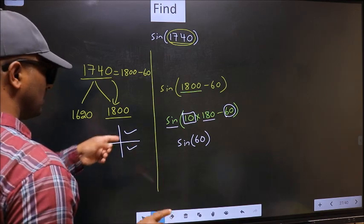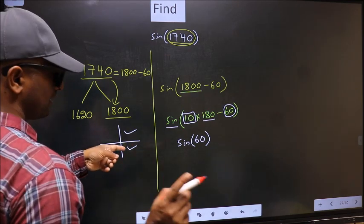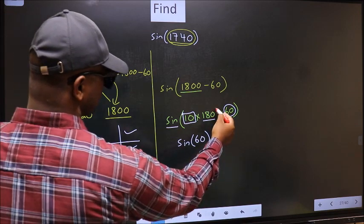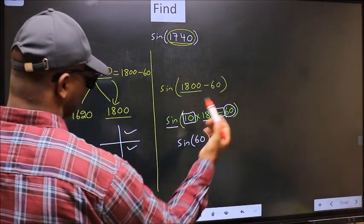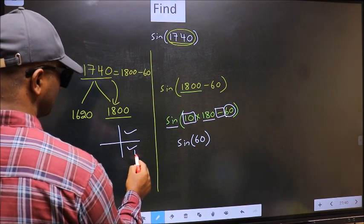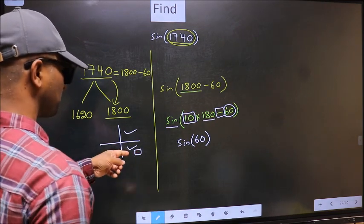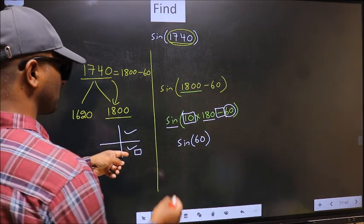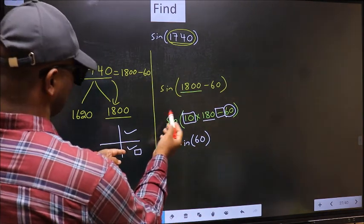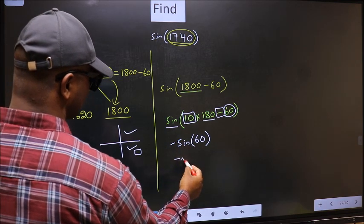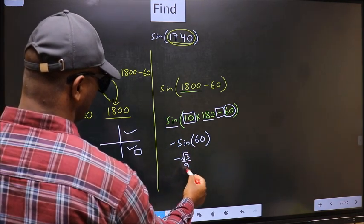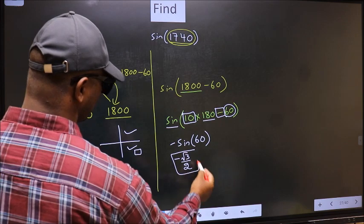So now, to select the quadrant, we should look at this symbol. Here we have negative. That means the angle lies in the fourth quadrant. And in the fourth quadrant, sine is negative. So we should put negative. So negative sine 60 is root 3 by 2. This is our answer.